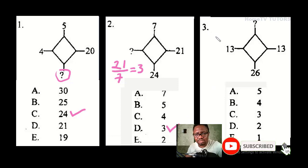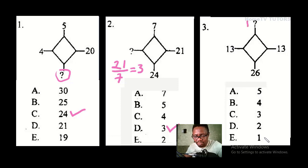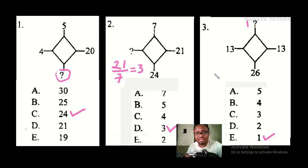For question 3, an unknown number multiplied by 13 gives 13, so that number is 1 — answer option E is correct. You can see it is that easy to figure out. See you in the next question, bye for now.